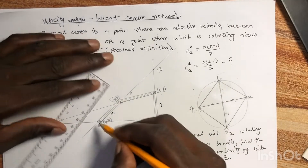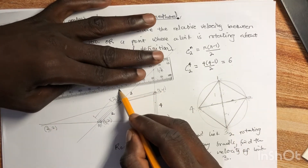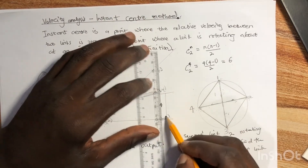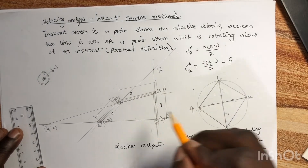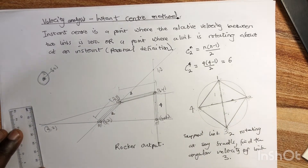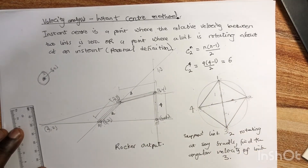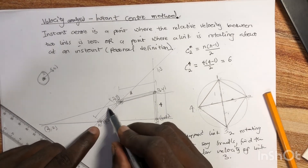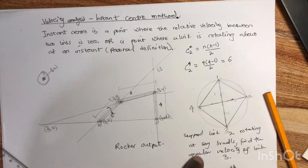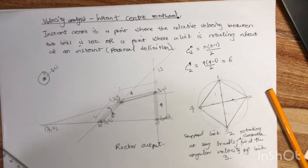Usually the problem will provide the lengths between instant centers as measurements on the diagram. For instance, they might tell you to find the velocity of link three, and give you the length of the crank — link two, which is the one doing the rotation. Suppose the angular velocity of link two is five radians per second clockwise.